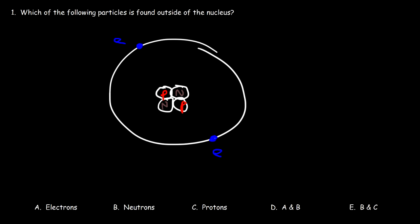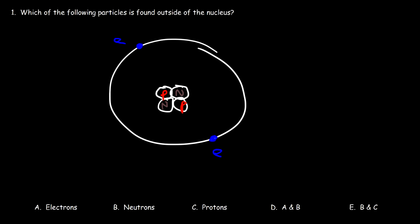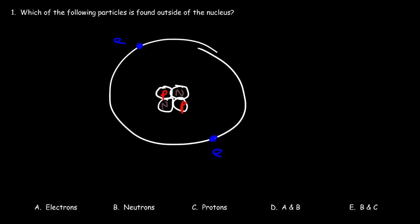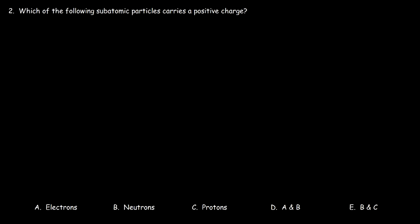The atom is mostly empty space. This nucleus is relatively small compared to the electron cloud, so a lot of high-energy particles can go straight through an atom. 99% of the mass is concentrated in the nucleus. Protons and neutrons are more than 1800 times more massive than an electron. So the particles found outside the nucleus are the electrons — A is the right answer.